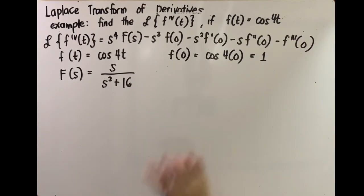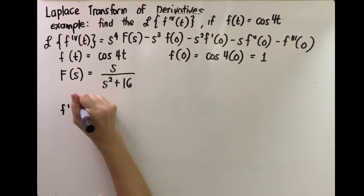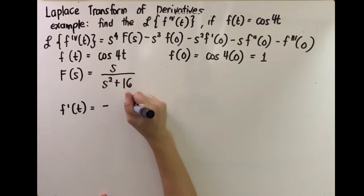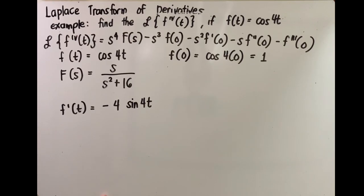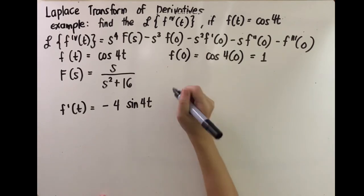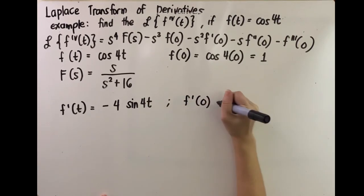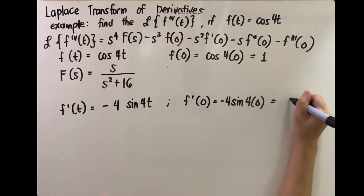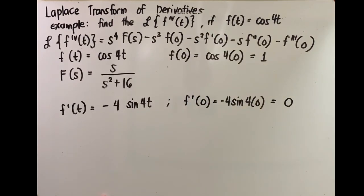We need f prime of 0, but first we solve for f prime of t. The first derivative of cosine is negative sine, so we get negative sine of 4t times the derivative of the angle, which is 4. So f prime of t equals negative 4 sine 4t. Then f prime of 0: substitute t with 0, giving negative 4 sine of 0. Since sine of 0 is 0, f prime of 0 equals 0. This term will become 0 when substituted.